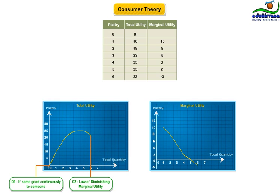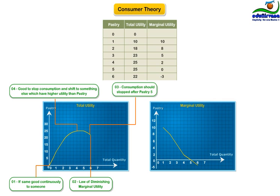Interesting. Yes. So the consumption should have stopped after pastry five, because you were in fact losing your happiness after pastry five. In fact, you would have felt good by stopping even at pastry 3 or 4 and shifted to something else which had a higher utility than pastry. As a rule, consumption needs to stop where marginal utility is equal to zero.